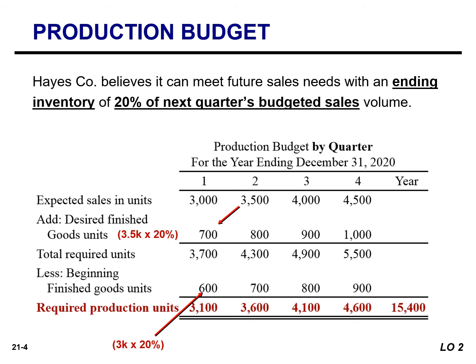Let's take a look at the second quarter. We're going to add 800 units, which is simply 20% of 4,000. The ending balance of Q1 becomes the beginning balance of Q2. For the third quarter, we take 20% of the anticipated sales in the fourth quarter and subtract the beginning balance of the third quarter, which is the ending balance of the second quarter. Similarly for the fourth quarter, the ending balance in Q3 becomes the beginning balance in Q4.